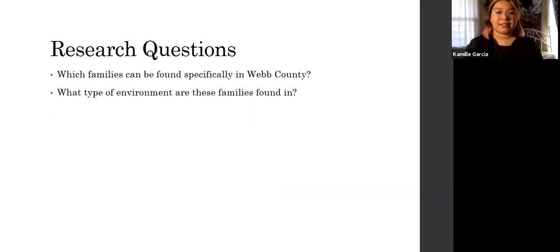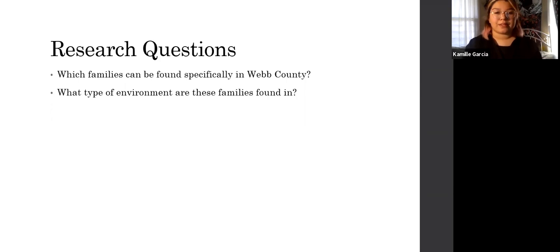For my research questions: which families can be found specifically in Webb County, and what type of environment are these families found in? Some of the families that can be found in Webb County include Poaceae, which are grasses; Agavaceae, which include agave; Cactaceae, which are cacti; and Asteraceae, which are daisies or flowers.